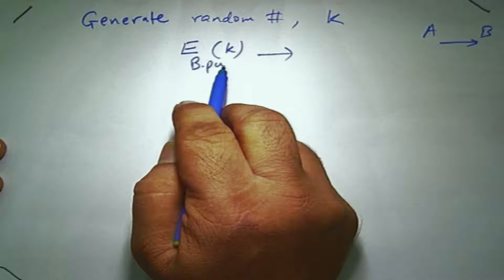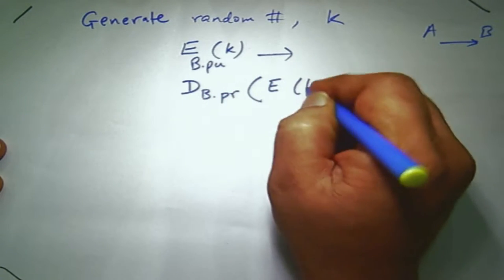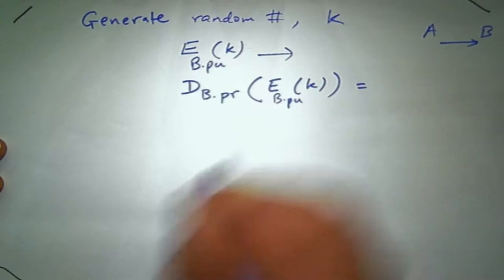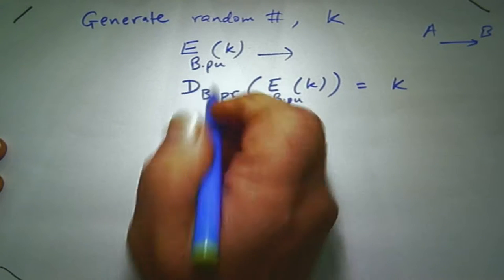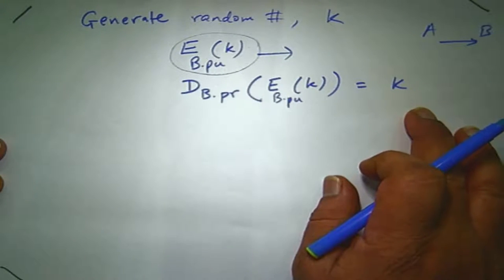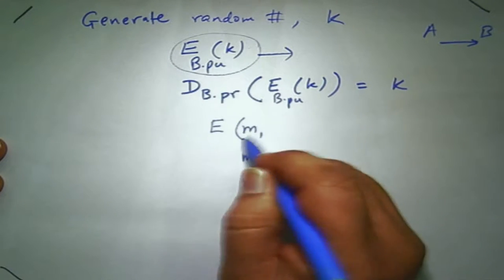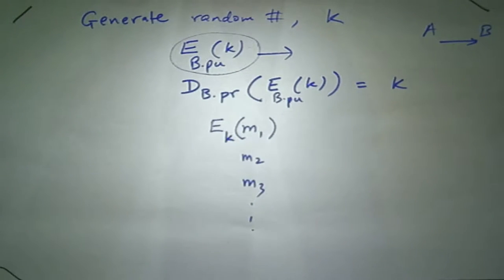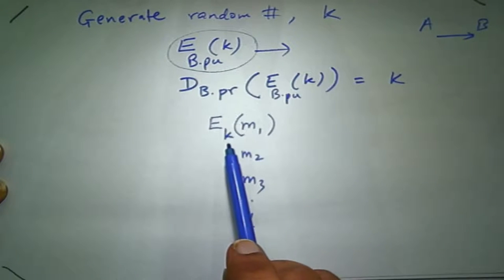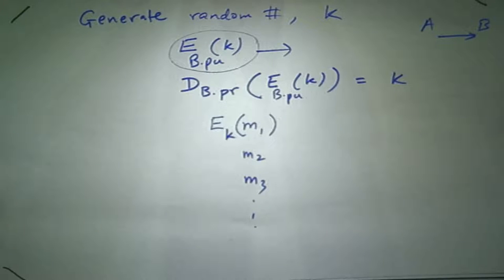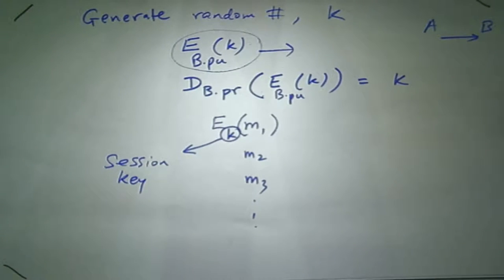So: encrypt K using B's public key so B can decrypt it using his private key. On the receiver side, you decrypt what you just received and get back the key K. Then subsequently every single message M1, M2, M3 will be encrypted using K, so that can be decrypted by the other party. This K is referred to as a session key.